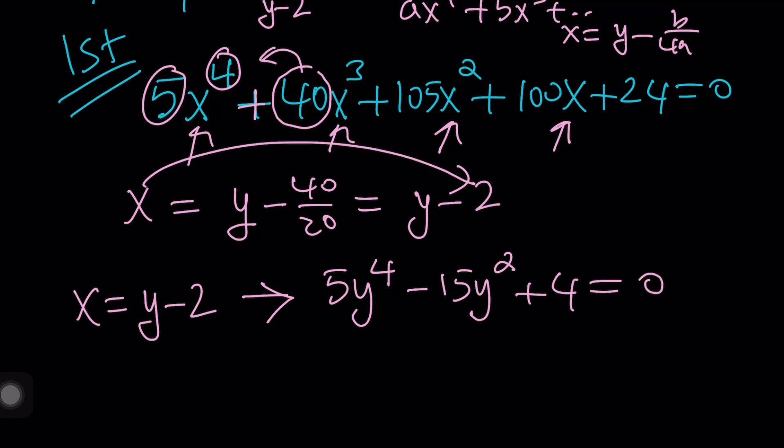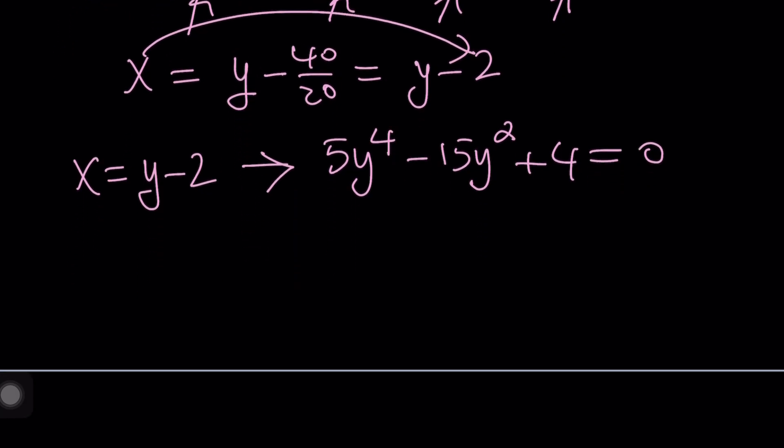You know what that is going to look like? If you replace x with y minus 2, you get 5y to the fourth minus 15y squared plus 4 equals 0. So, that's awesome. Because not only you get a depressed quartic, you get a very, very depressed quartic. Not only do you lose the cubic term, you also lose the linear y term, which is nice. And this is a bi-quadratic. This means that y squared can be replaced with something. How about t? t is good.